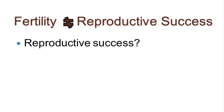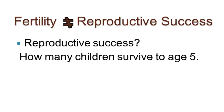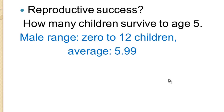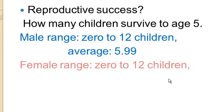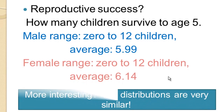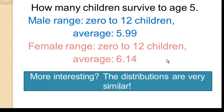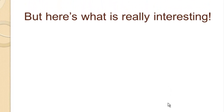Fertility is not the same thing as reproductive success — these are different concepts. Having a child is no guarantee that child will survive and reproduce. Borgerhoff Mulder defines reproductive success as how many children survive to age five. The male range is zero to 12 children with an average of around six; the female range is also zero to 12 with an average just over six. Again, there is no statistically significant difference between men and women, and their distributions are very similar.